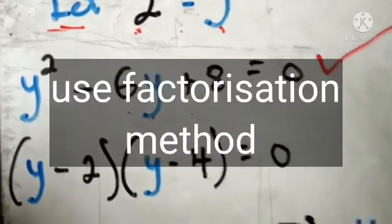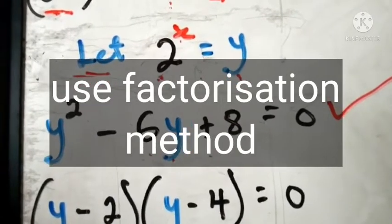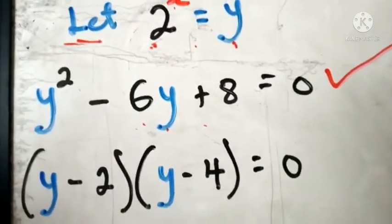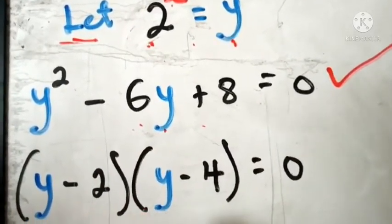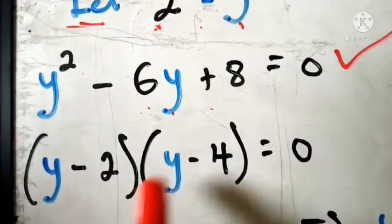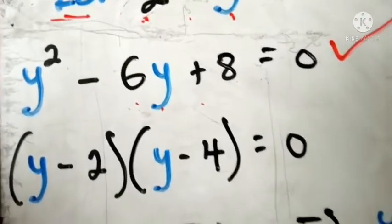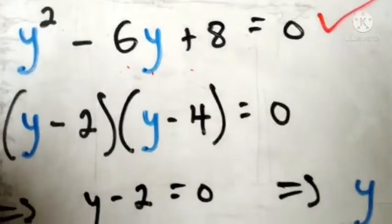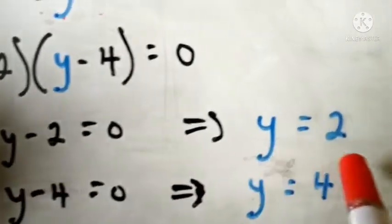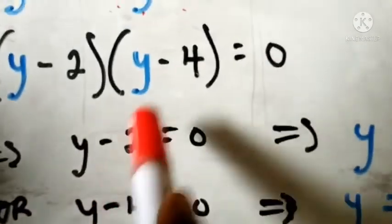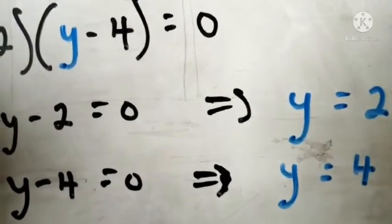Now using the factorization method — if you don't know how to solve quadratics by factorization, comment down below. By factorization, these two guys factor into: y minus 2, times y minus 4, equals zero. Now you solve each bracket separately. The first bracket gives y minus 2 equals zero, meaning y equals 2. The second bracket gives y minus 4 equals zero, meaning y equals 4.